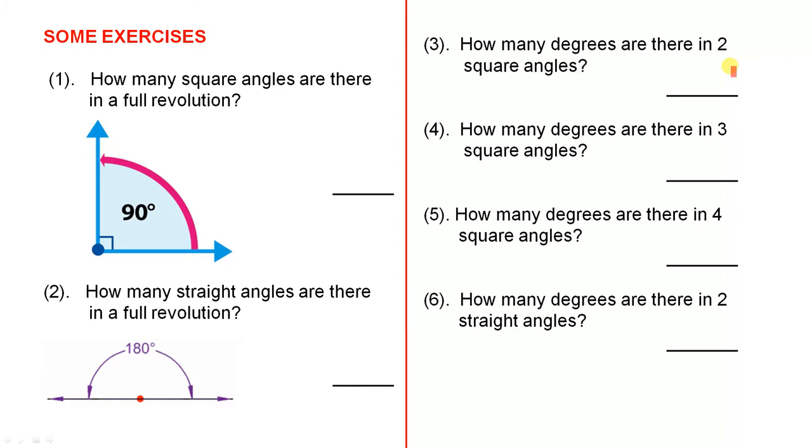How many degrees are there in two square angles? That's easy to answer because you know that one square angle is 90. How many degrees are there in three square angles?